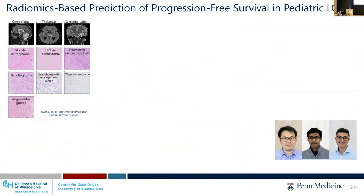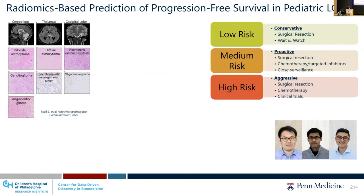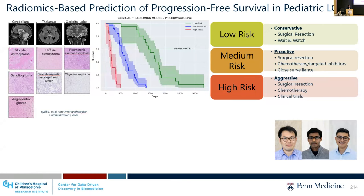Surgical resection is not always possible in deep-seated or highly infiltrated tumors. Ten-year overall survival in pediatric low-grade gliomas is over 90%, but progression-free survival is around 50%, meaning almost half of patients will need adjuvant therapies, likely leading to cognitive decline and morbidities. With non-invasive methods that can stratify patients based on predicted risk, we can tailor treatments — conservative for low-risk, proactive for medium-risk, and aggressive for high-risk patients.